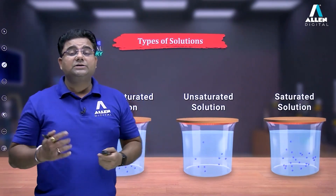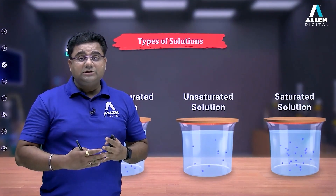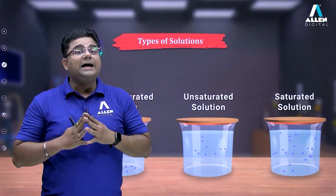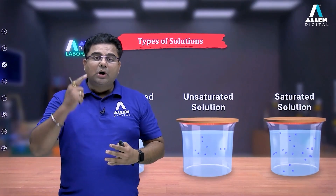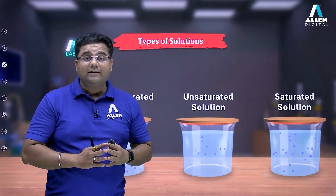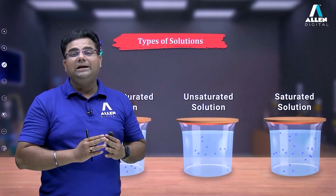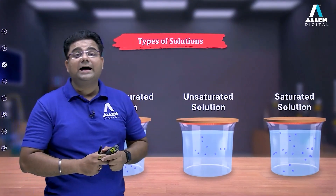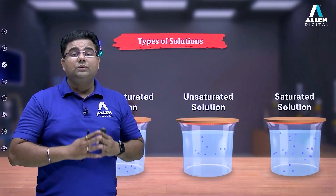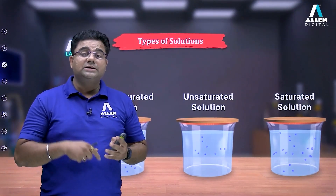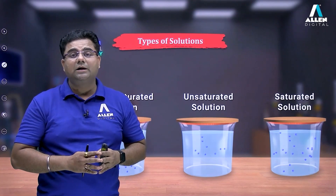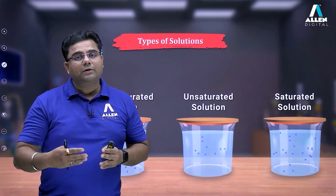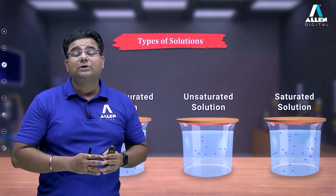A saturated solution is one in which the solute is present according to the maximum capacity of the solvent. An unsaturated solution has solute below the capacity of the solvent. A supersaturated solution has solute above the capacity of the solvent. We increase the capacity of the solvent by increasing the temperature — as temperature increases, solubility increases, so more solute can be added.